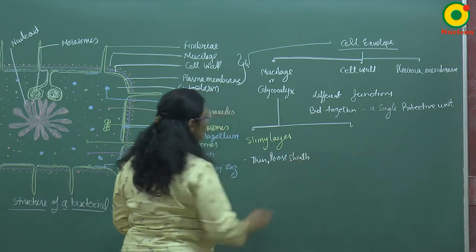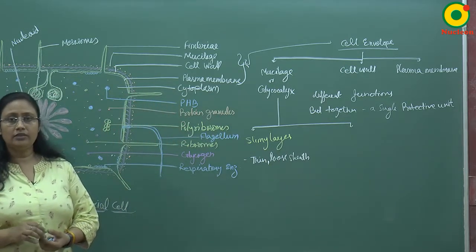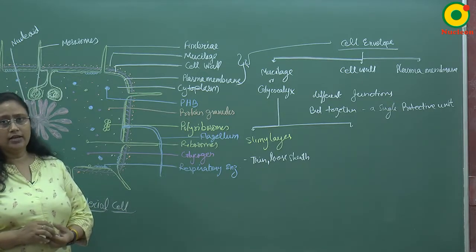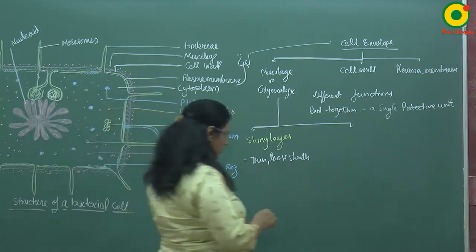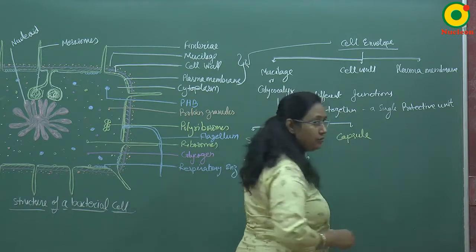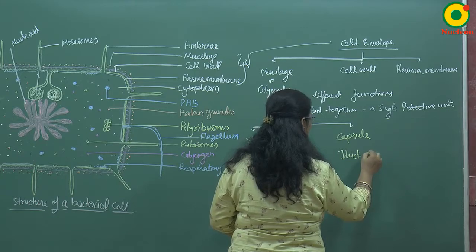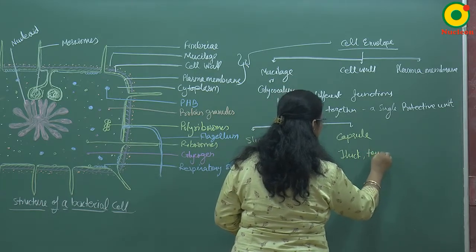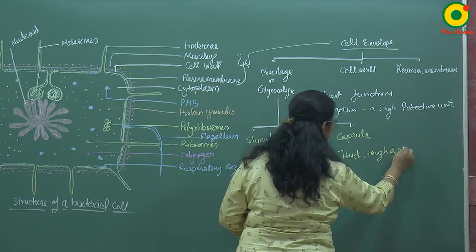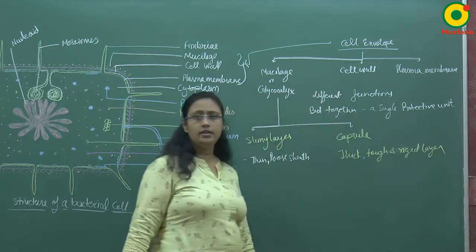When the mucilage or glycocalyx is present in the form of a thick, compact, or rigid layer, then it is known as the capsule. The capsule is the thick, tough, and rigid form of the glycocalyx.